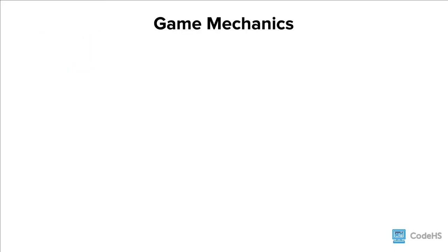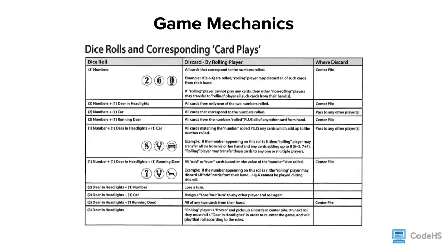Game mechanics are basically how a game is played. The Deer in the Headlights tabletop game comes with detailed instructions for each roll of the dice. Different actions are taken depending on what each player rolls or the state of the dice. This table shows what a player can and cannot do when each type of dice combination is rolled. The player's allowed actions, given the state of the dice, are part of the game's mechanics.